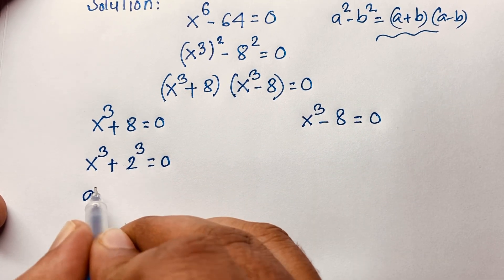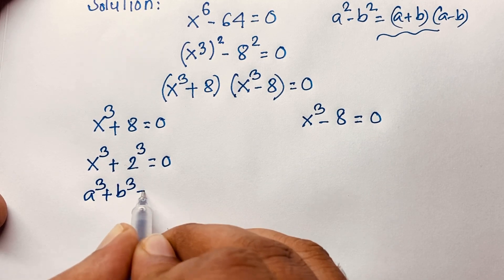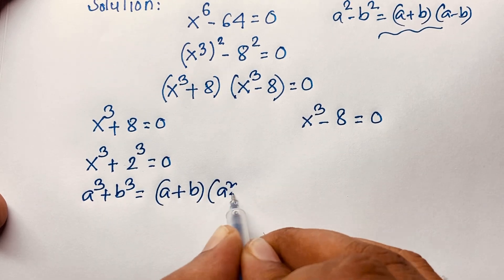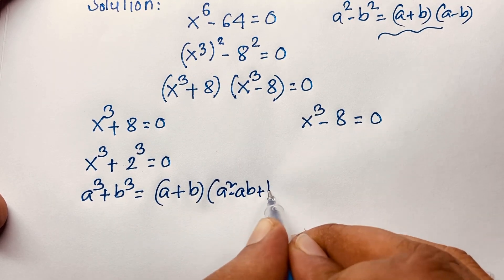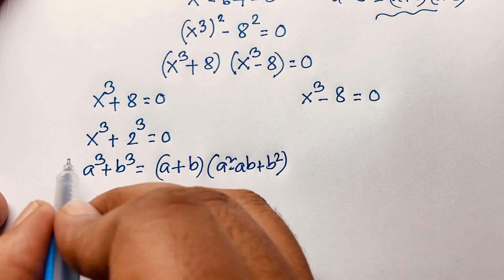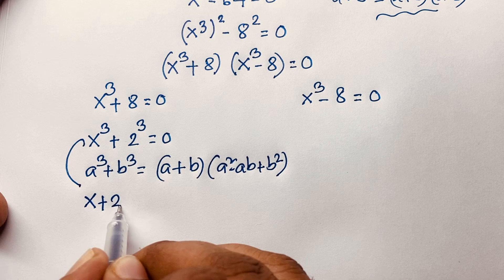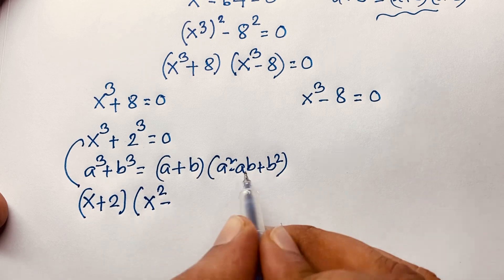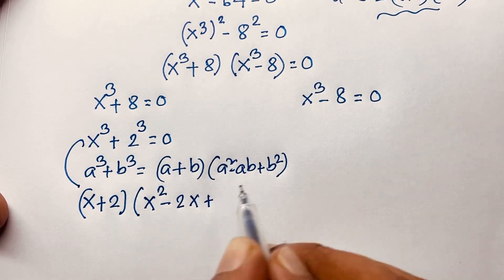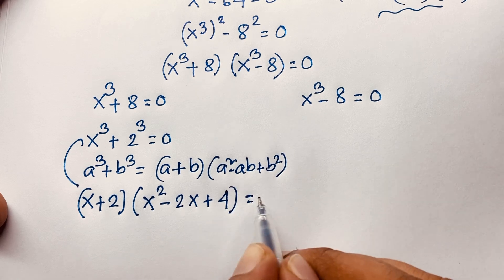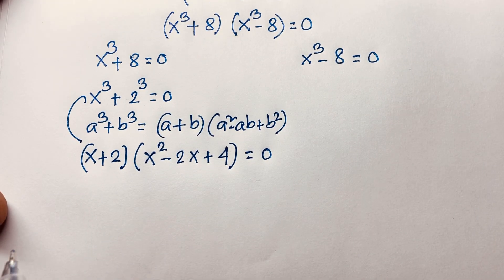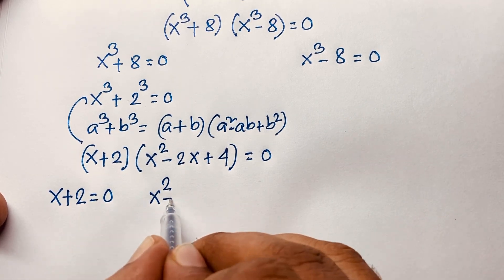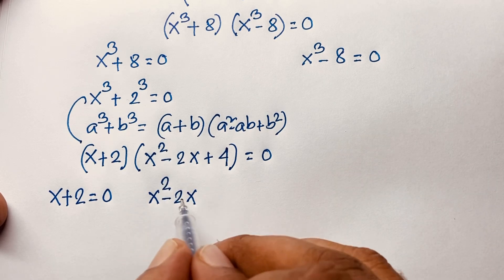For Case 1: x³ + 8 = 0, which is x³ + 2³ = 0. Applying the sum of cubes formula — a³ + b³ = (a + b)(a² − ab + b²) — we get (x + 2)(x² − 2x + 4) = 0.